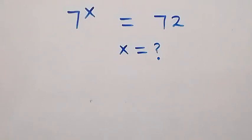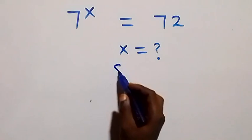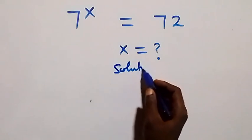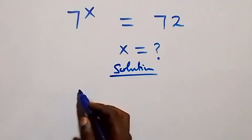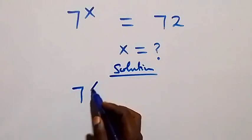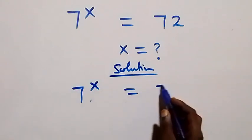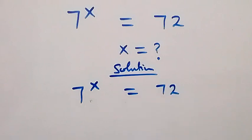Hello, you are welcome. How to solve this nice exponential equation. What is given is seven raised to power x equals to 72. Let's take the log on both sides.